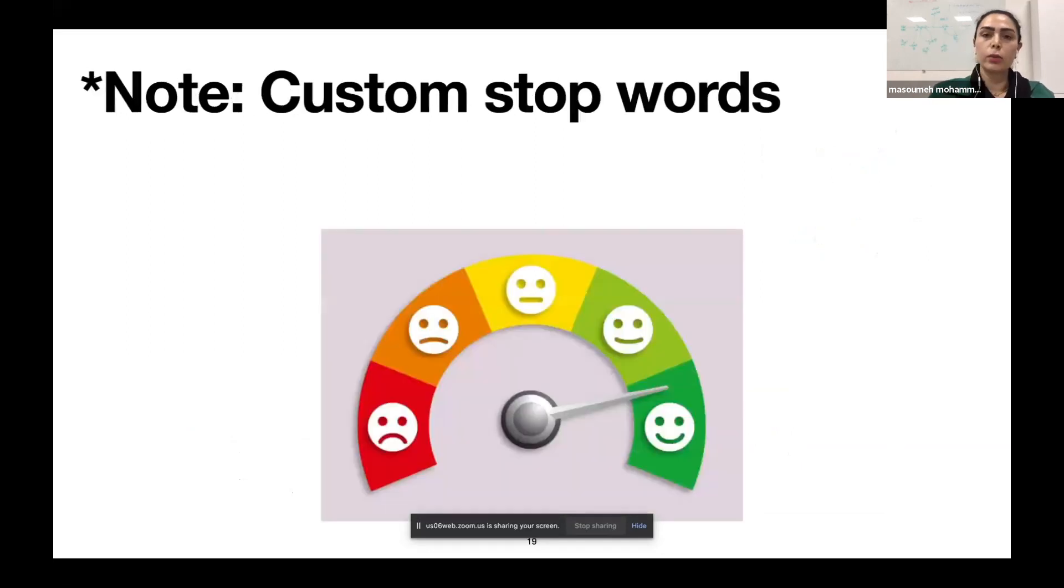Another contribution of the paper is using custom stop words. Sometimes these words change the sentence contextually or the tone of the review. So according to our problem, we use a common stop word list and we plan after publishing the paper to publish the data set and a custom stop word list on GitHub.